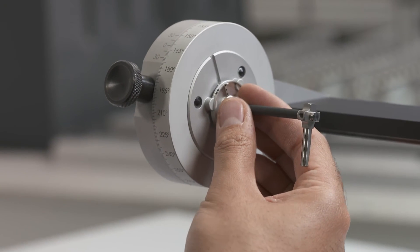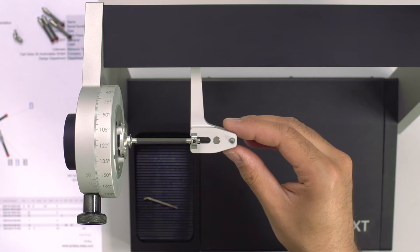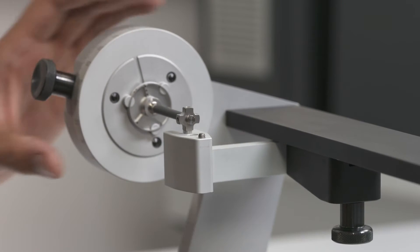The FixAssist for the VAST XXT probe head enables a fast exact adjustment of the stylus with the precision of up to half a degree.